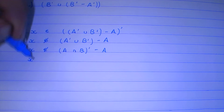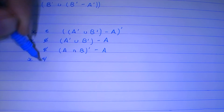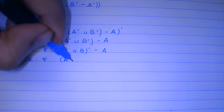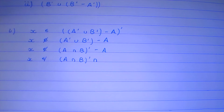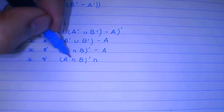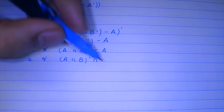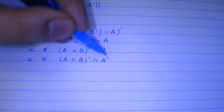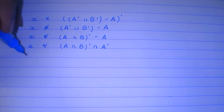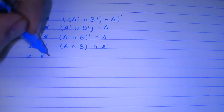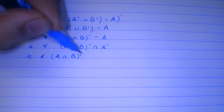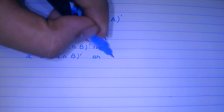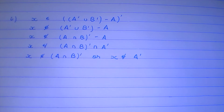Furthermore, x would not belong to (A ∪ B)' intersection A'. Going further, x does not belong to A ∩ B', or x does not belong to A'.